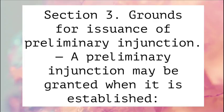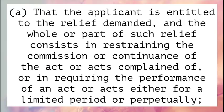Section 3. Grounds for Issuance of Preliminary Injunction. A preliminary injunction may be granted when it is established: a. That the applicant is entitled to the relief demanded, and the whole or part of such relief consists in restraining the commission or continuance of the act or acts complained of, or in requiring the performance of an act or acts either for a limited period or perpetually.